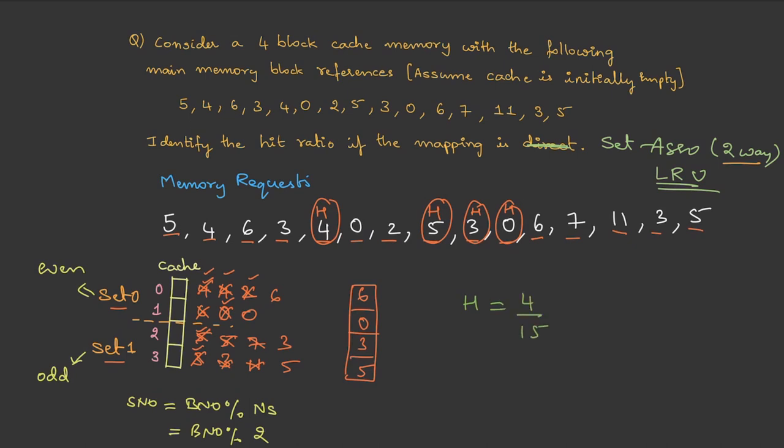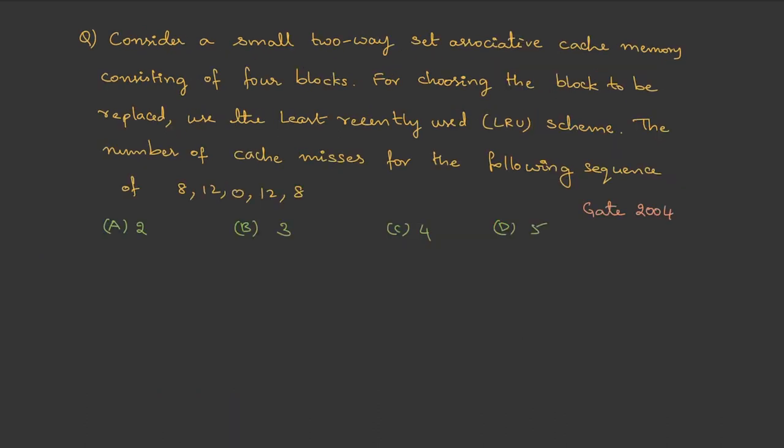With this, let's do one gate question. It is a question asked in gate 2004. Consider a small two-way set-associative cache memory consisting of four blocks. For choosing the block to be replaced, use the LRU scheme. The number of cache misses for the following sequence.